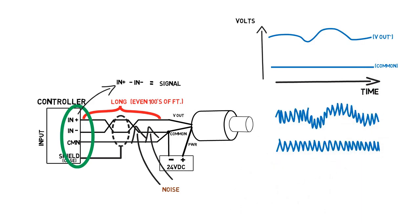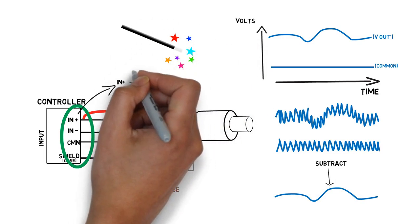Subtracting the minus signal from the plus signal will cancel out the noise, and the resulting signal will be very clean, like this. This is the magic of differential inputs.